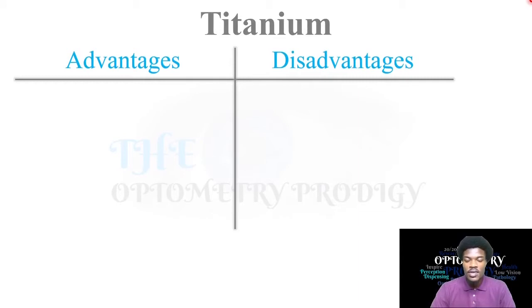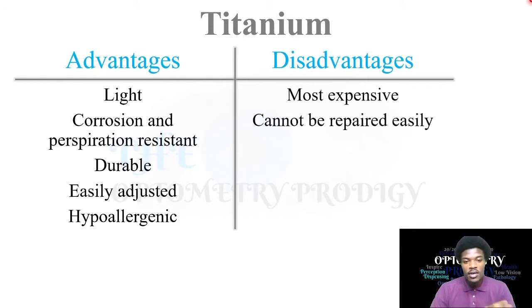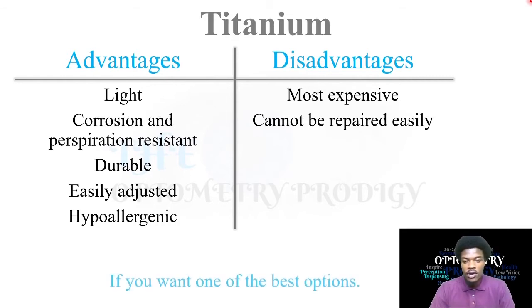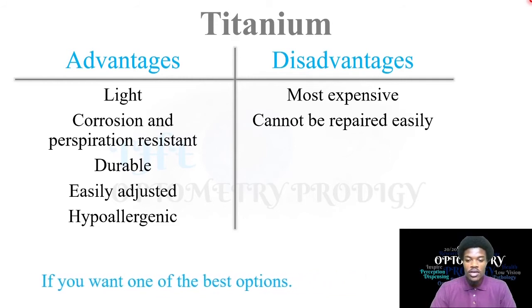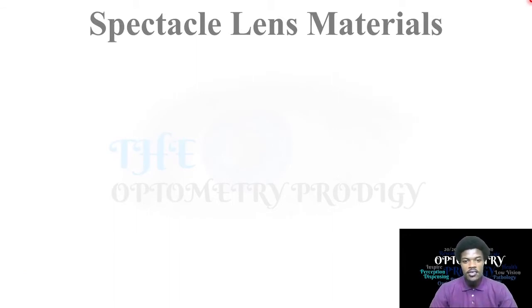Titanium — the advantages are that it is light, corrosion and perspiration resistant, durable, easily adjusted, and hypoallergenic. However, it is one of the most expensive metals and cannot be repaired easily. Titanium is considered one of the best materials for frames, so if you want one of the best options, titanium is the way to go.